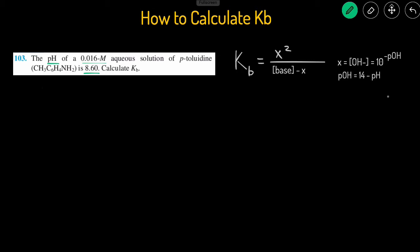So we're given the pH, the first thing we're going to do is convert the pH into pOH by subtracting the pH from 14. So we'll do pOH equals 14 minus the pH, which is 8.6, and that will give us a pOH of 5.40.